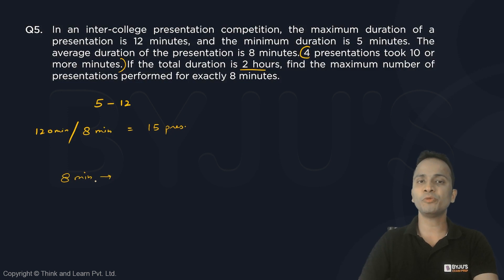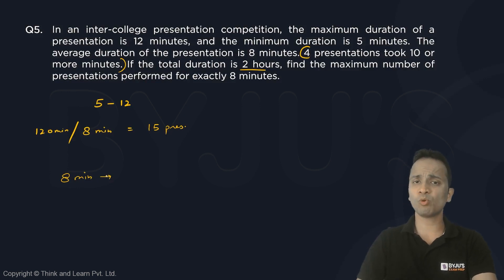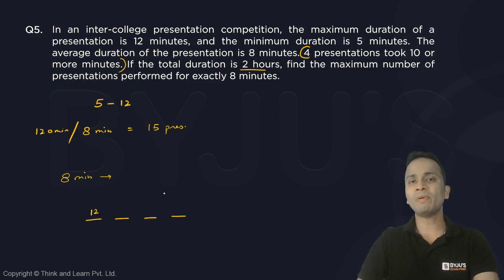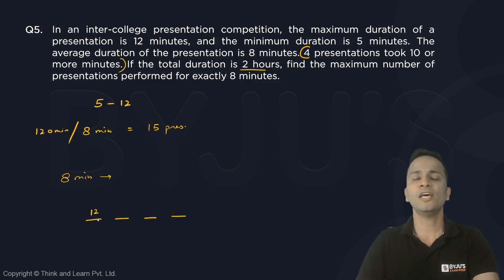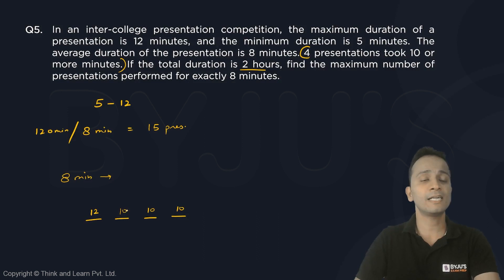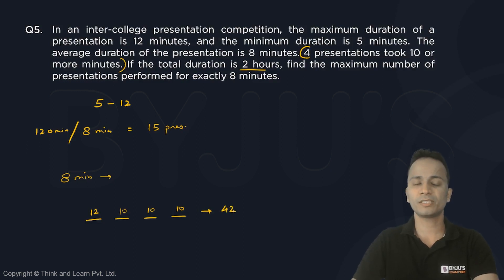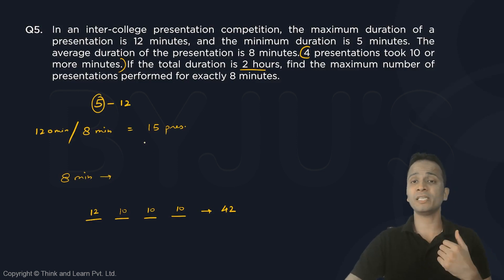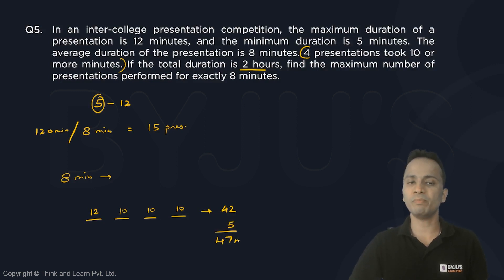To maximize the number of eight-minute presentations, I should minimize the time for the presentations that took 10 or more minutes — there are four such presentations. One of them is 12 minutes, so to minimize, I'll consider the other three as 10, 10, and 10. These four presentations consume a total of 42 minutes. Also, the minimum duration is 5 minutes, so I'll consider at least one presentation for 5 minutes: 42 plus 5 gives 47 minutes consumed across five presentations.